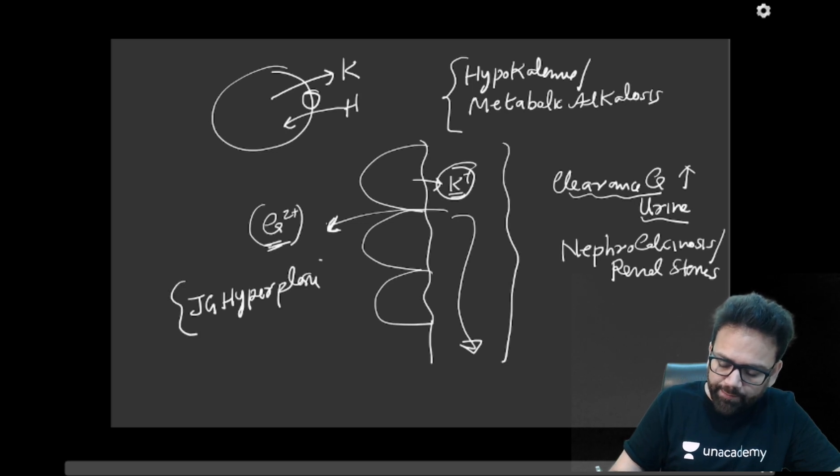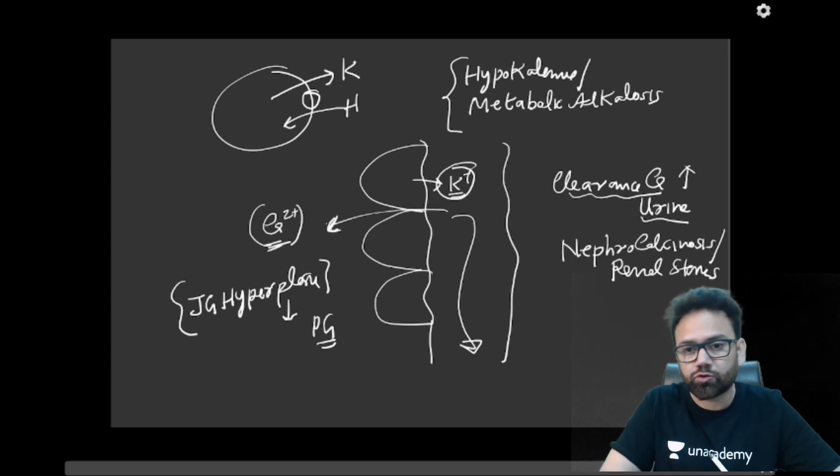And because aldosterone is increased and RAS is activated, there will be JG hyperplasia. This is also one of the characteristic of Bartter syndrome. JG hyperplasia and that will increase prostaglandins also. This is also one of the most important feature of Bartter syndrome. And that is very important in understanding of the management of Bartter syndrome.